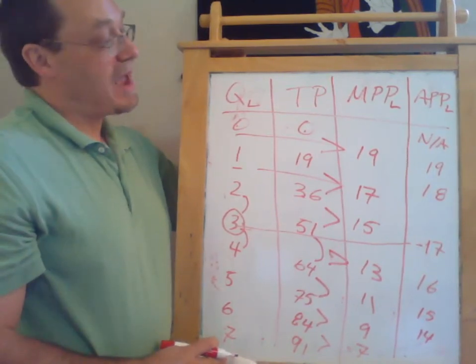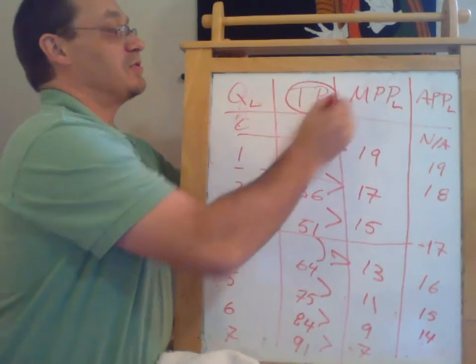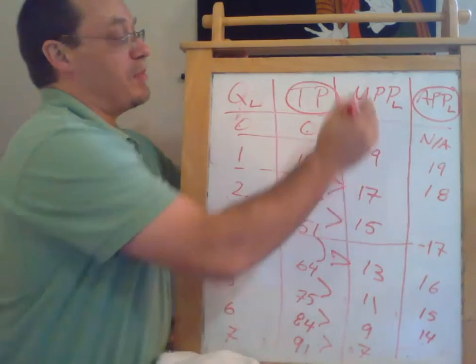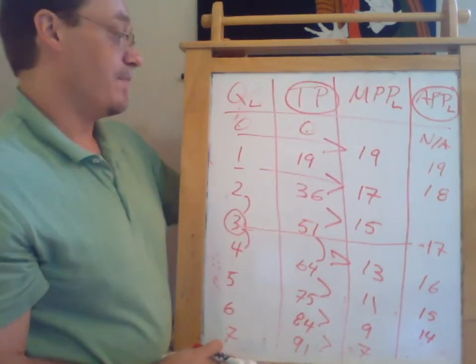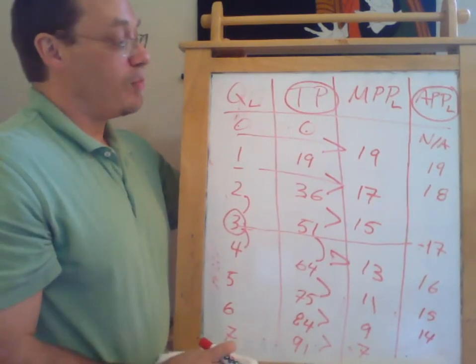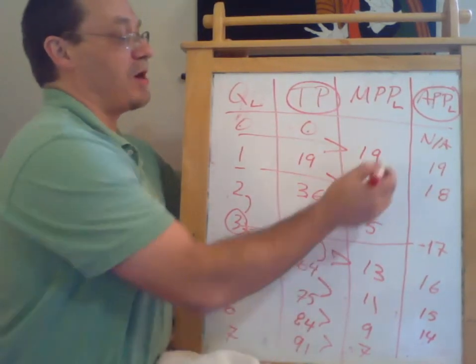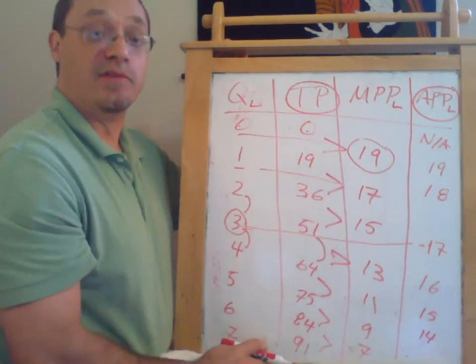So out there in doing real world stuff, we can almost always directly measure this total product, and we can almost always directly measure average productivity. Measuring the marginal actually is a little bit trickier, unless we really have sequentially added workers in this way.